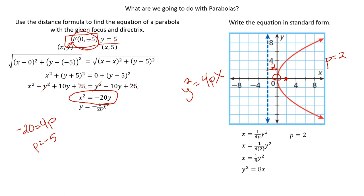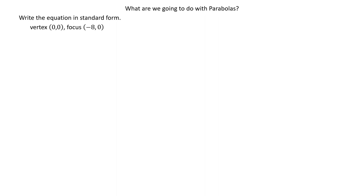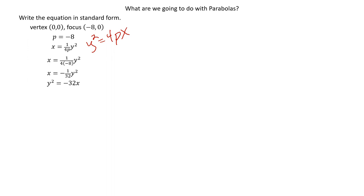We can also write an equation given a vertex and a focus. If the focus is 8 units to the left of the vertex, then P = −8. Since it opens horizontally, we use Y² = 4PX. Plugging in P = −8 gives Y² = −32X. A lot of times, just finding the P value and knowing which direction the parabola opens is all you really need.